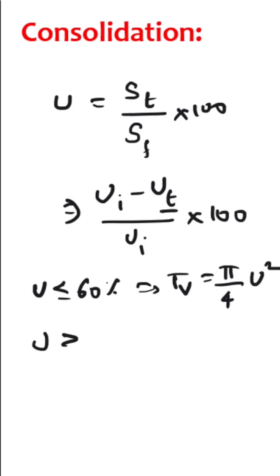If u is greater than 60 percent, then time factor is given by 1.781 minus 0.933 log of 100 minus u percentage.